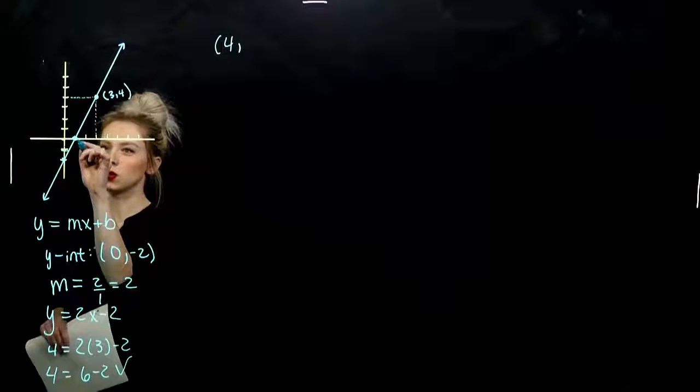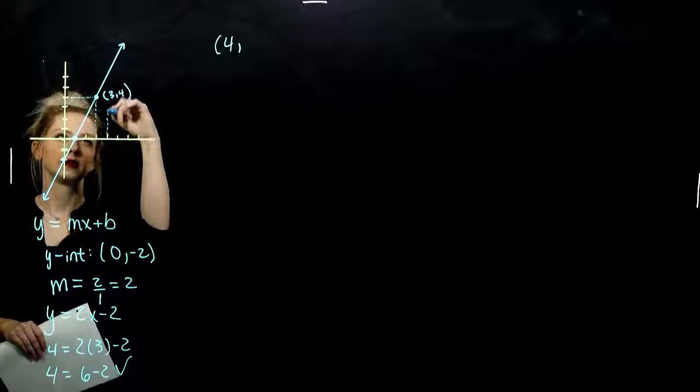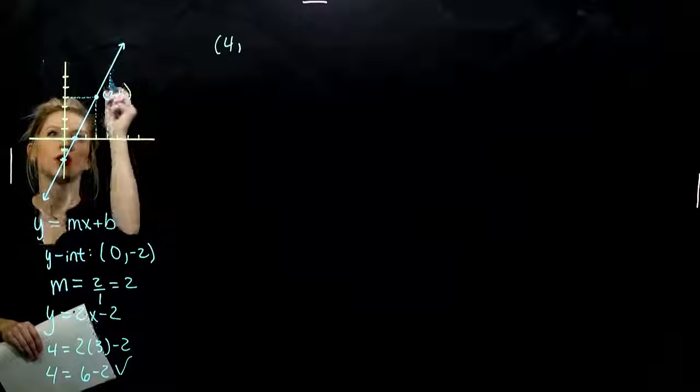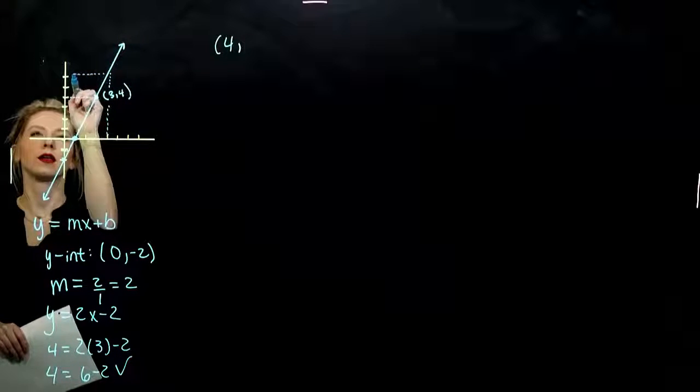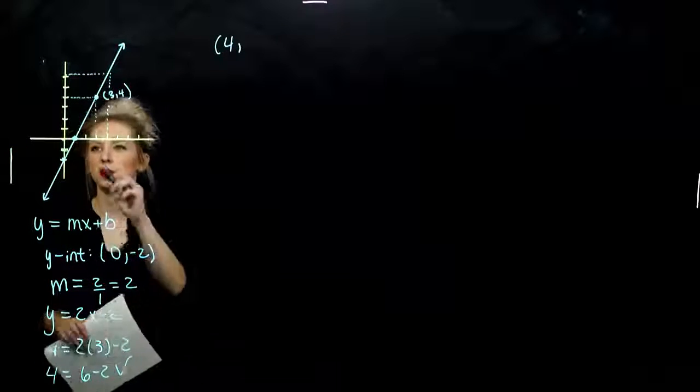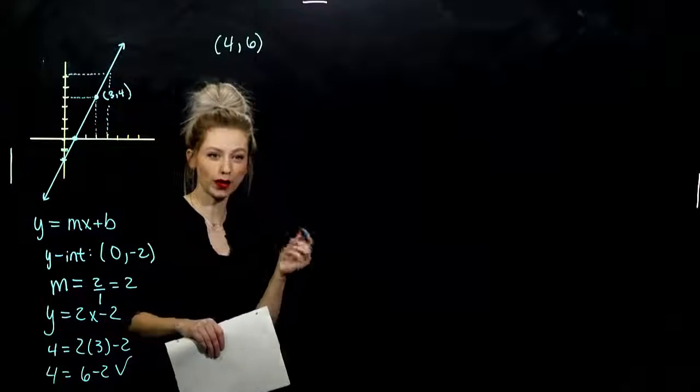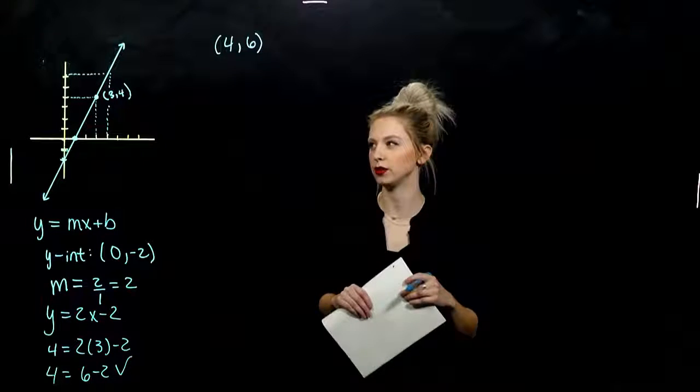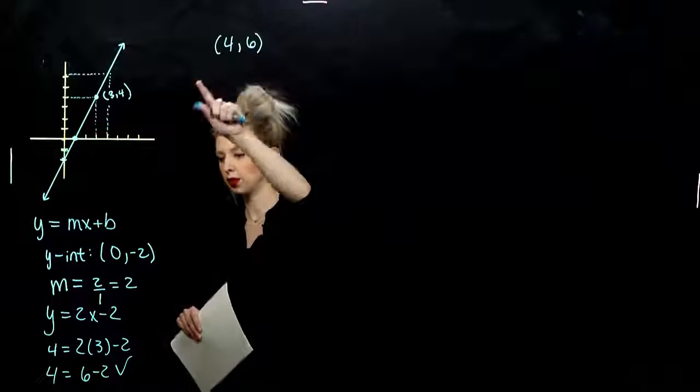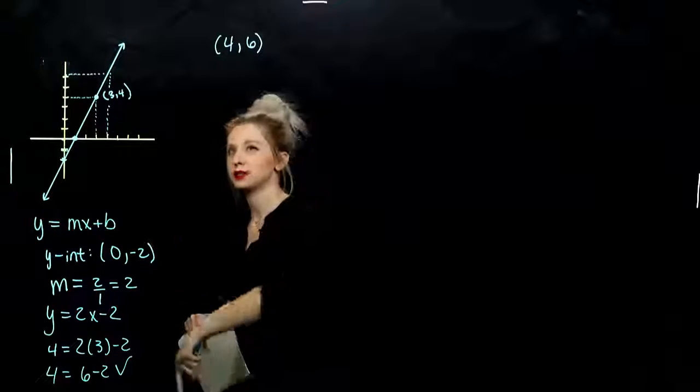So what are you thinking? When x is 4, 1, 2, 3, 4, I travel up to my line, over to the y-axis, and I'm looking at 1, 2, 3, 4, 5, 6. Okay? So that point is on my line. It's a solution to the thing. If I plug in 4 into my equation, I get out 6 for y.